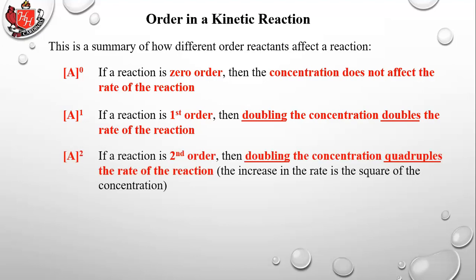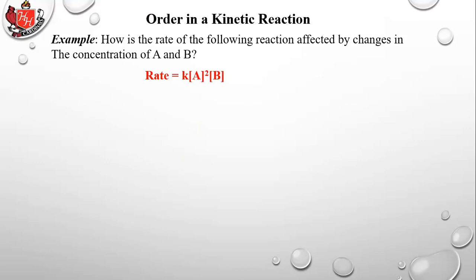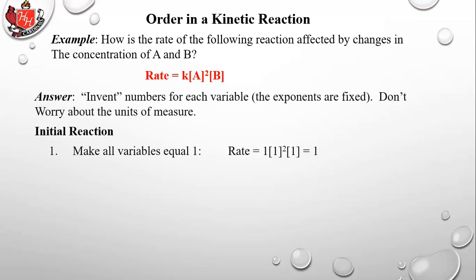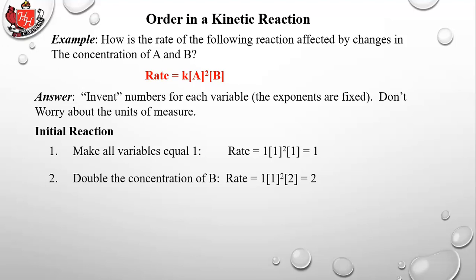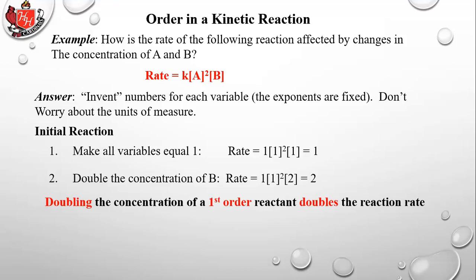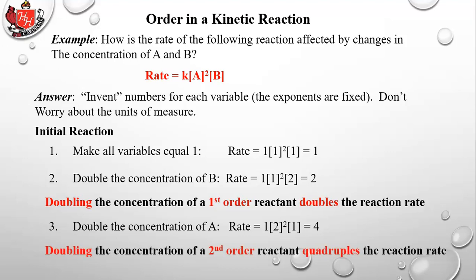If the reaction is second order, doubling the concentration quadruples the rate. For example, setting K=1, [A]=1, [B]=1, rate equals 1. If we double [B] (first order): rate = 1 × 1² × 2 = 2, so the rate doubles. If we double [A] (second order): rate = 1 × 2² × 1 = 4, so the rate quadruples. Doubling a second order reactant quadruples the reaction rate.